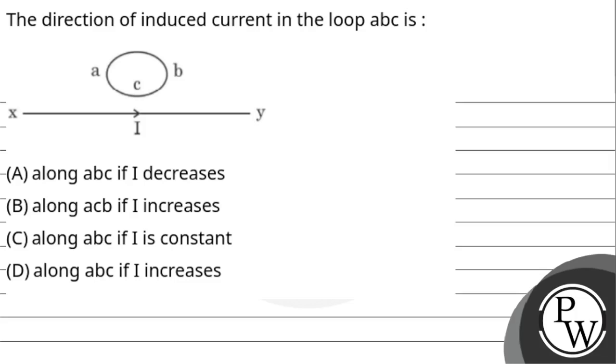Hello Bachcho, let us read the question. The direction of induced current in the loop ABC is: Option A, along ABC if I decreases; along ACB if, option B, along ACB if I increases; along ABC if I is constant; along ABC if I increases.